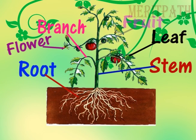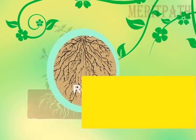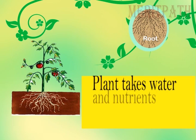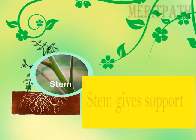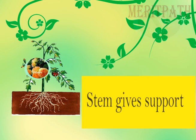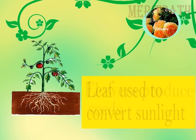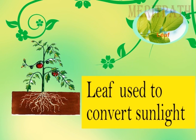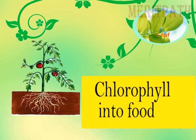The root supports the plant and takes in water and nutrients required for the plant to grow. The stem gives support to the plant. The flower produces seeds, while leaves use sunlight and chlorophyll to convert carbon dioxide and water into sugar.